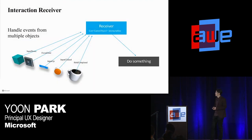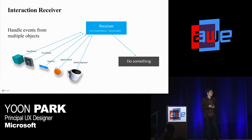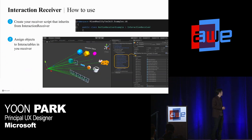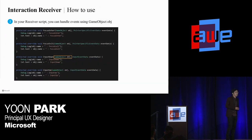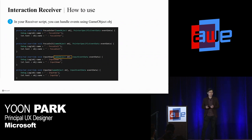Interaction Receiver is another useful utility you can use with the interactable object. Just like in this diagram, you can handle events from multiple objects in a single receiver script. You create your own receiver script that inherits from the Interaction Receiver, then assign the interactable object to the interactable field. Using the game object OBJ, you can identify which object triggered the action. It's a convenient way to handle events from multiple objects.